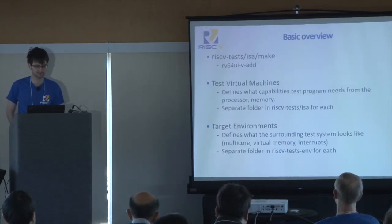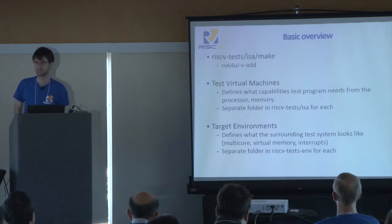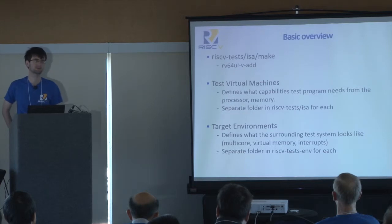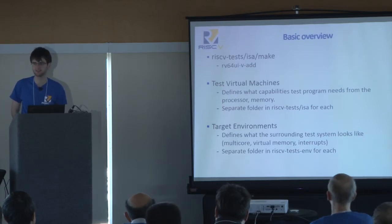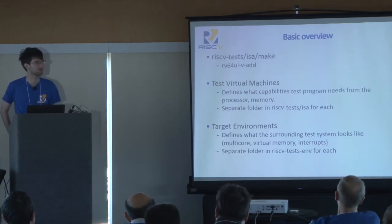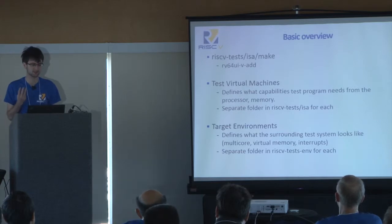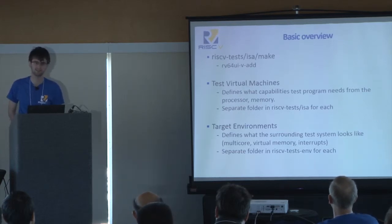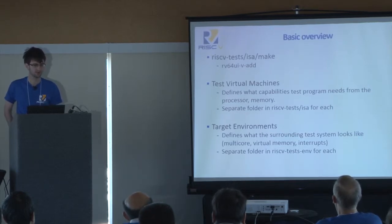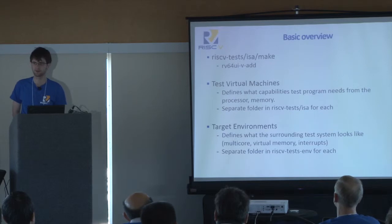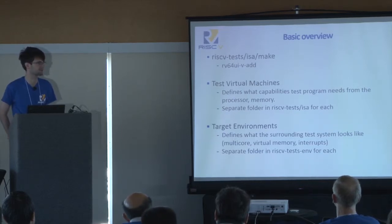First and foremost, if you go into RISC-V tests slash ISA and then run the make command, you'll see a bunch of files be created with extensions .s, .dump, .hex, etc. One of them will have names such as rv64ui-v-add. These are comprised of three parts. The first part, rv64ui, defines what we call the test virtual machine. The second part, the v, defines what we call the target environment. And the third part, the add, defines what the test was.